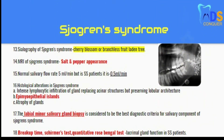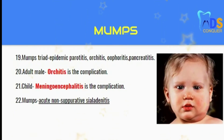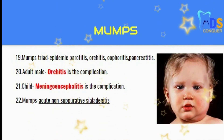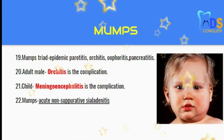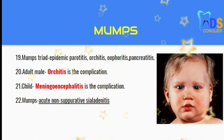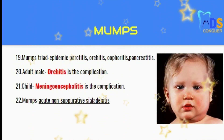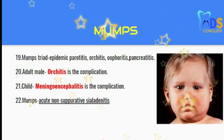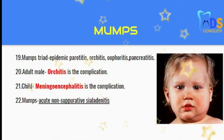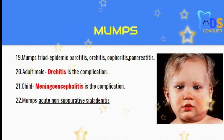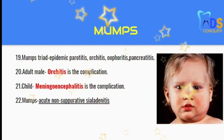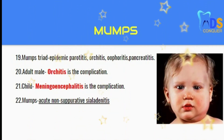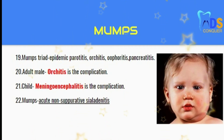Moving on to mumps. Point 19: the mumps triad is composed of epidemic parotitis, orchitis, oophoritis, and pancreatitis. Point 20: adult males encounter orchitis as the most common complication, whereas in children we see meningoencephalitis. Point 22: mumps is an acute non-suppurative sialadenitis.